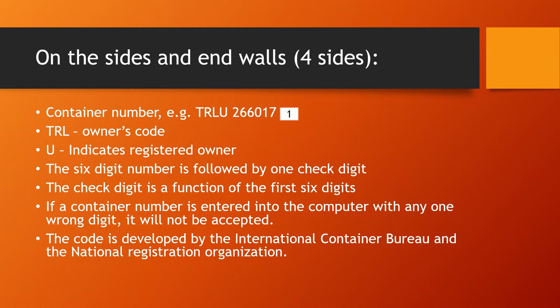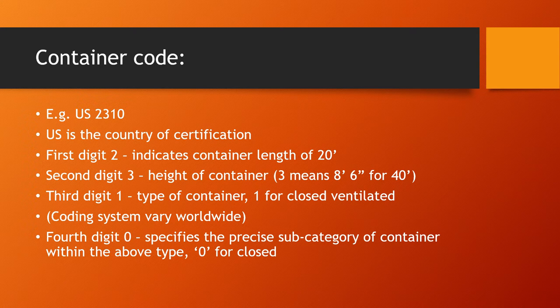The six-digit number that follows the letters also includes one check digit. The check digit is actually a function of the first six digits, meaning that if a container number is entered into the computer with even one wrong digit, it will not be accepted. This code is developed by the International Container Bureau and the national registration organization.